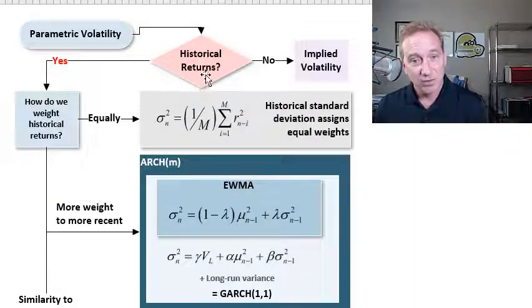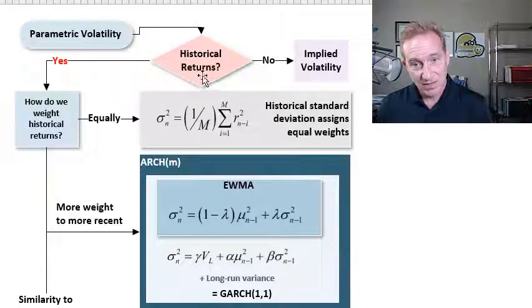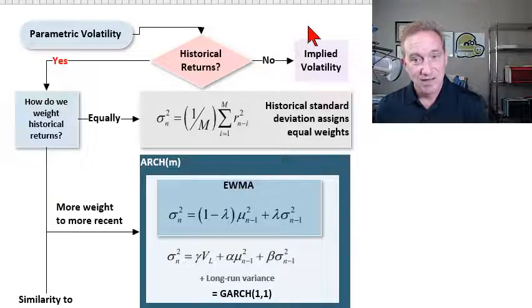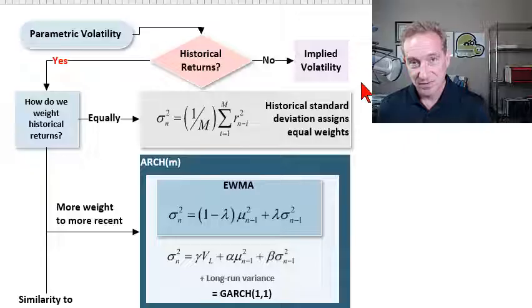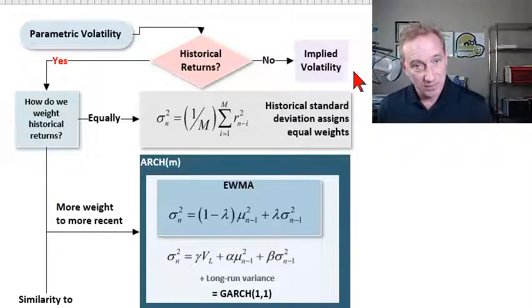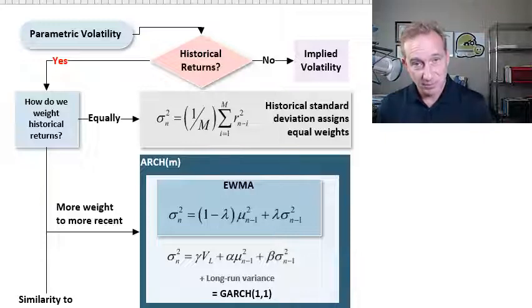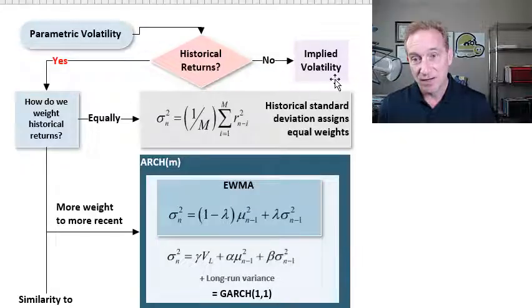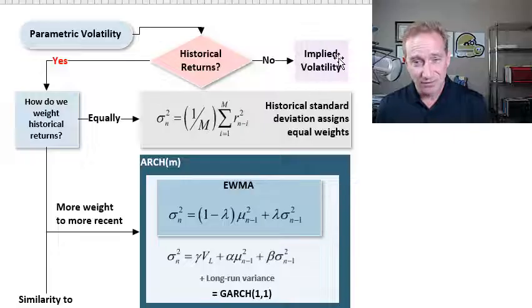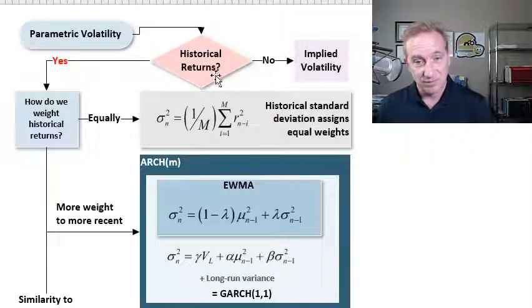I have this first gating question: Are we using historical returns to inform our estimate of today's volatility? We have a choice here. We can say no, let's use implied volatility, which is profoundly convenient but requires two things: a pricing model and a traded or observed price. The most common application is the implied volatility for an option. If we have a Black-Scholes option pricing model and traded prices for options, we can use the traded prices to reverse engineer what implied volatility would solve for those observed prices. We can retrieve an implied volatility without any data, but oftentimes we don't have the price.